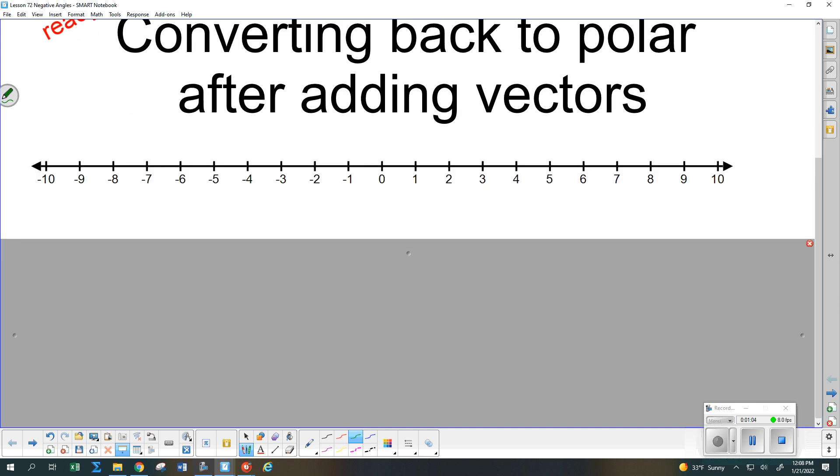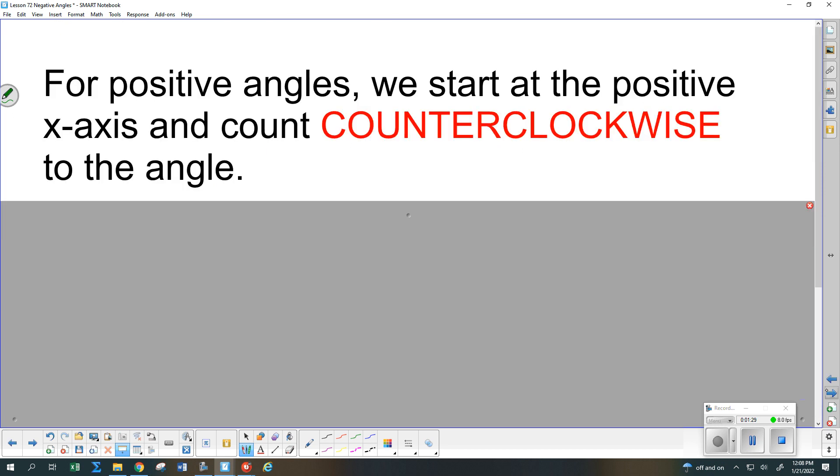You know that with a number line, when we talk about positive numbers, it means we go this direction to the right. And when we talk about negative numbers, it means we go in exactly the opposite direction. So when I talk about angles, positive is going to mean I go in one direction, and a negative angle is only going to mean I go in the opposite direction. So we know that with a positive angle, we start on the positive x-axis, and we go up and to the left. It's called counterclockwise because that's the reverse of how the hands on a clock like the one here in the classroom would go.